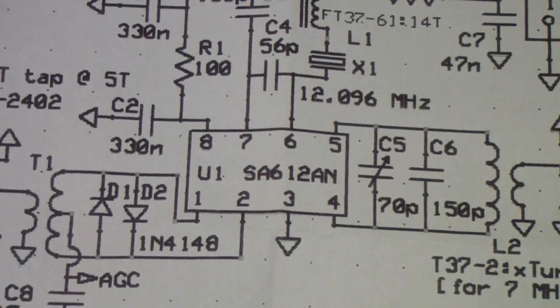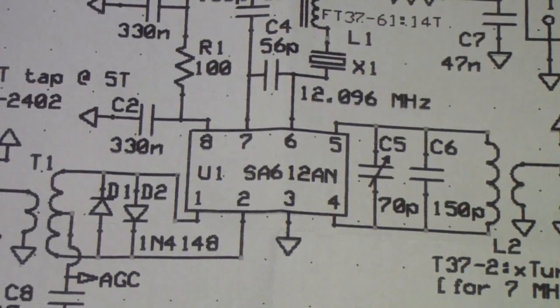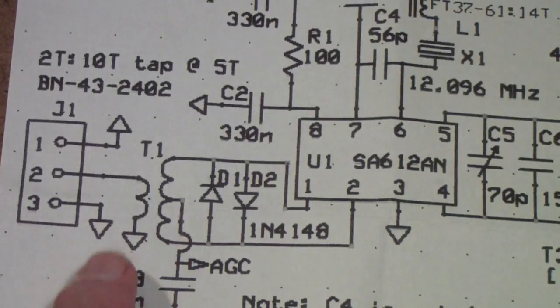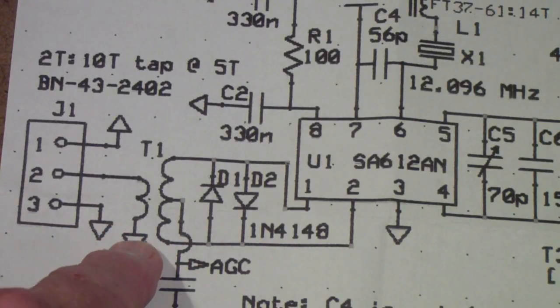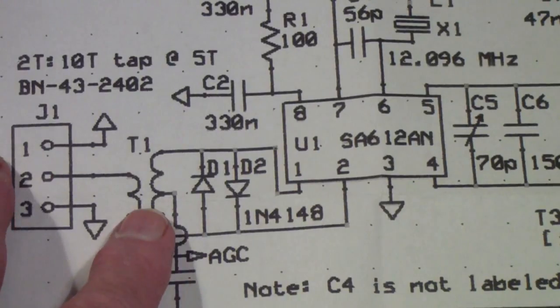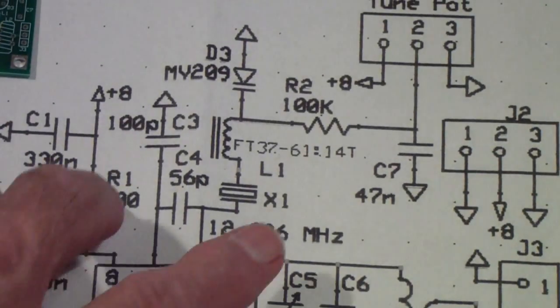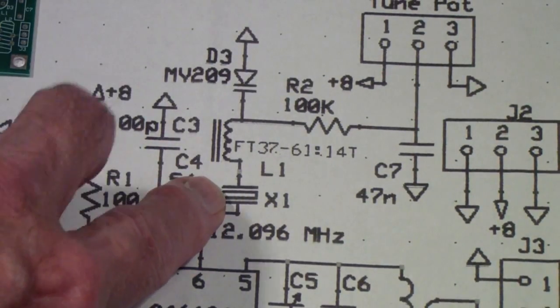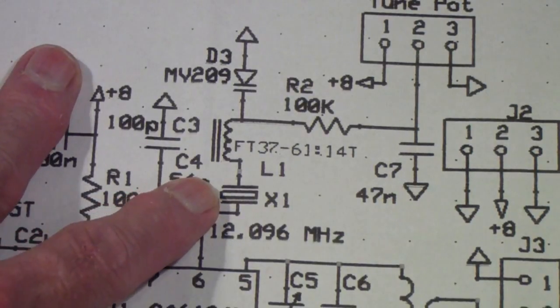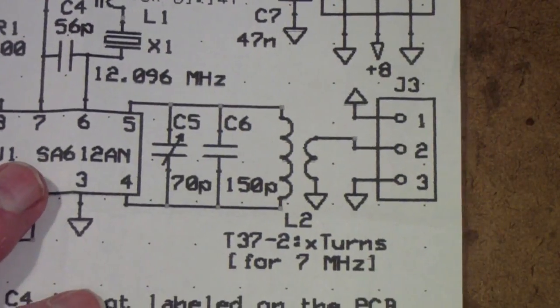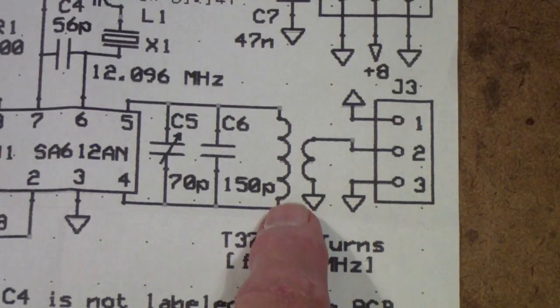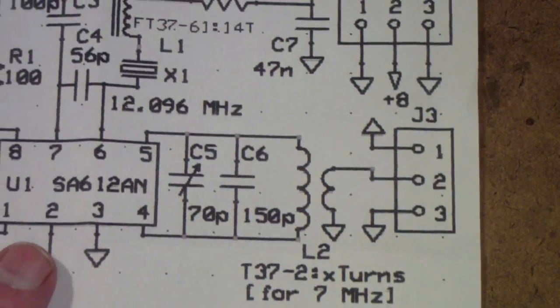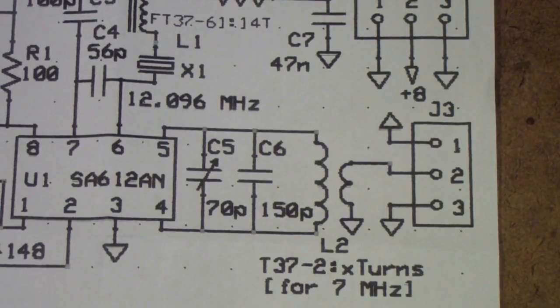The first thing that's a little unique about this are the coils. There are three coils. The first is T1, which is a coupling or input transformer with a center tap secondary. The second one is an inductor that's intended to lower the frequency of this 12.096 megahertz crystal. And the final coil is once again a transformer for the output with an untapped primary and a secondary.